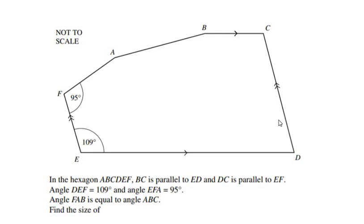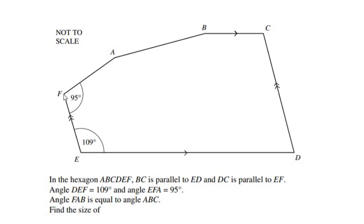Welcome, or welcome back to my channel. In this video we are going to solve an example on polygons. In the hexagon ABCDEF, BC is parallel to ED, and DC is parallel to EF.